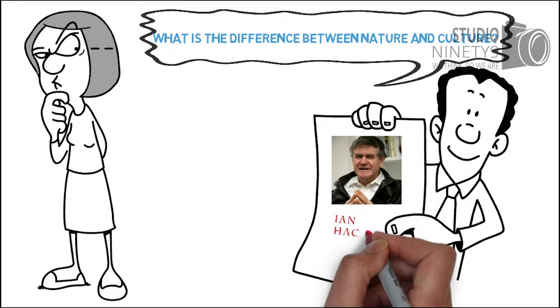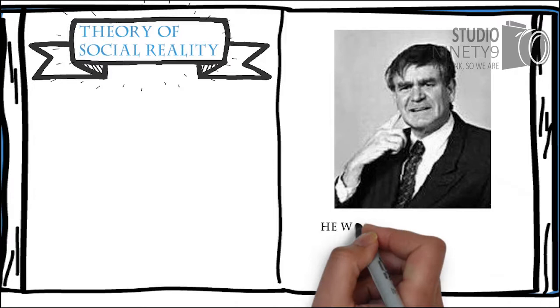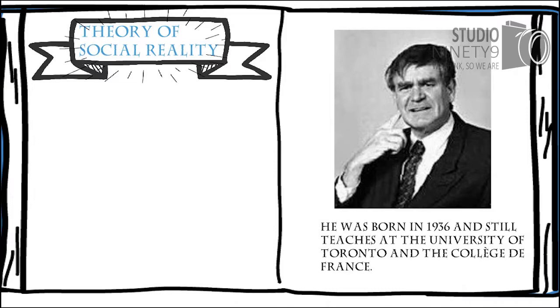Ian Hacking is a philosopher who developed a theory of social reality. He was born in 1936 and still teaches at the University of Toronto and the Collège de France.